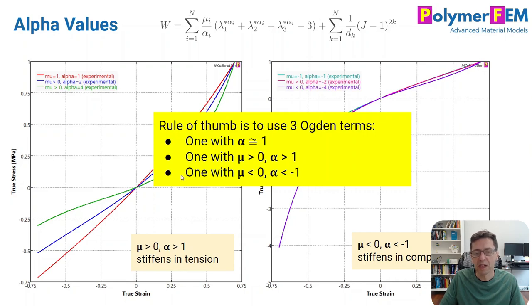And then I scale the mu parameters properly. And by doing that, I can have a material model that has the right stiffening effect in tension and in compression. And you can only do that if you have some of the terms also have alpha to be negative.